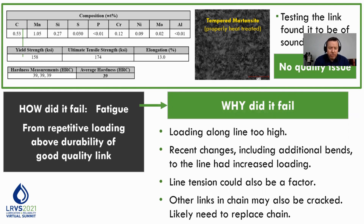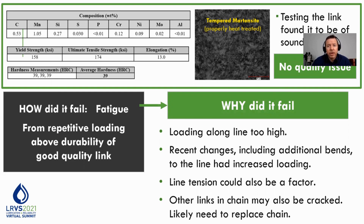Knowing this — figuring out that the link had been overloaded — is really crucial to preventing future failures. Now that we know this link suffered higher loading than expected, what are the odds that only this one link was affected? Probably very low. That means the majority — essentially all — of your chain has probably been overloaded. There's a strong likelihood that other links in your chain already have fatigue cracks in them that are just growing; it's going to be a matter of time. To solve this problem, you need to do two things, and the order is incredibly important. First, figure out how to reduce the loading on the chain links — investigate where the extra loading is coming from and remediate that. Then second, replace the chain, because there are probably links already cracked. If you get the order wrong, it's a ticking time bomb again. If you replace the chain before reducing the loading, you could create additional cracks and cause failure again.